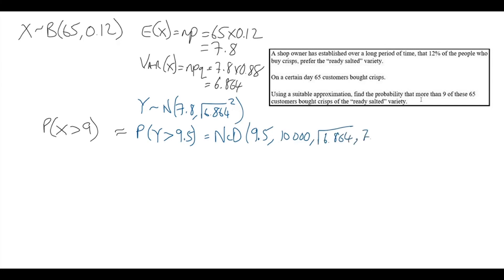The standard deviation is the square root of 6.864 and the mean is 7.8 in our calculator. So we get 0.2582.